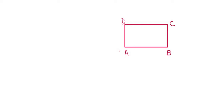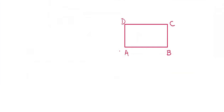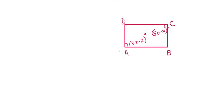What is given? Angle A is 3X minus 2 degrees, and angle C is 50 minus X degrees. This is given information. Angle A is 3X minus 2 and angle C is 50 minus X.